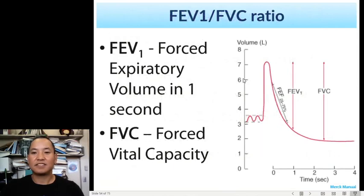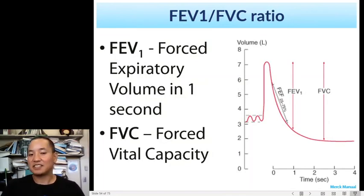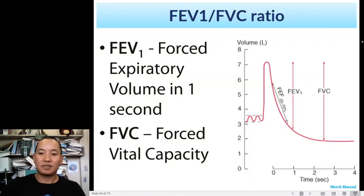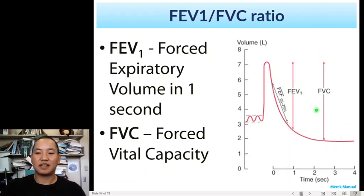The FEV1 to FVC ratio is something we measure in spirometry, and it gives an indicator of what type of lung disease a patient might have. All you're doing is comparing how much volume you had in the FEV1 compared to the maximum volume you have in the forced vital capacity.